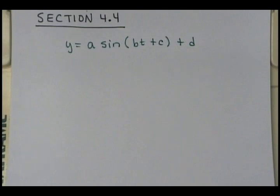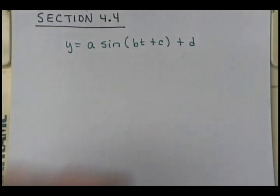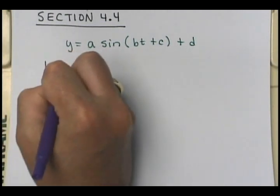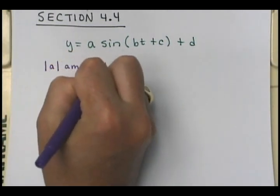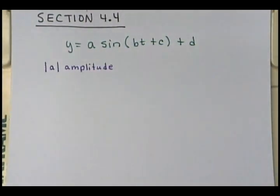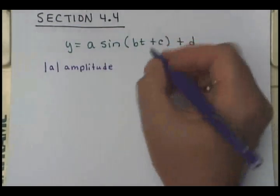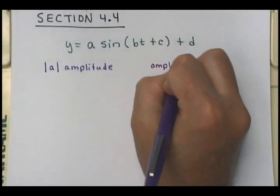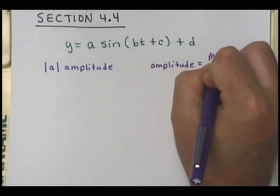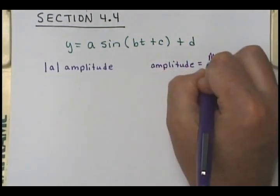We already know that a is the amplitude, and d is our vertical shift. Now, if they didn't give you the function y equals a sine of bt plus c plus d, and instead gave you a maximum and a minimum point on the graph, then your amplitude would be equal to the max minus the min, divided by 2.